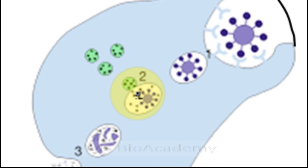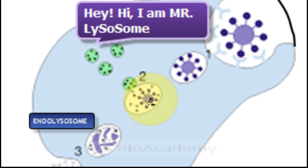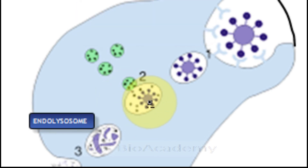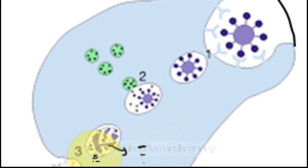This endosome then fuses with lysosomes to form an endolysosome. The lysosome releases all its digestive enzymes inside the endosome, and these enzymes degrade the protein molecule into smaller peptides — roughly 10 to 15 amino acids long.